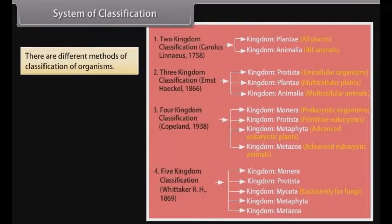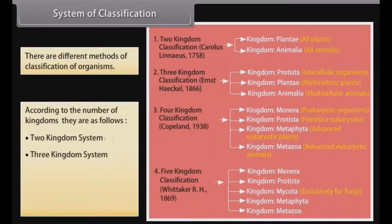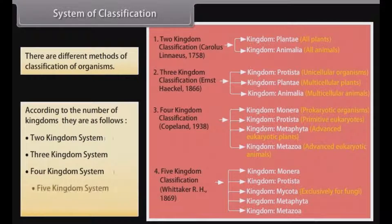There are different methods of classification of organisms. According to the number of kingdoms, they are as follows: the 2 kingdom system, 3 kingdom system, 4 kingdom system, 5 kingdom system, and 6 kingdom system.